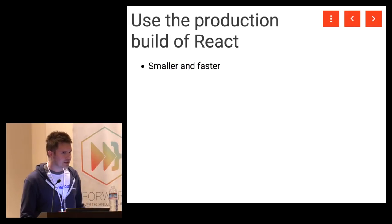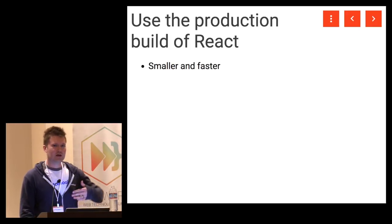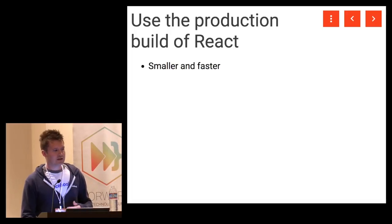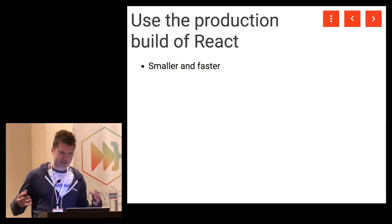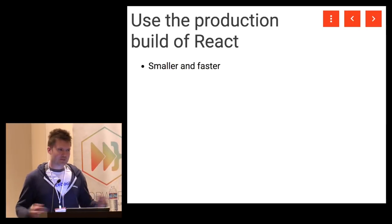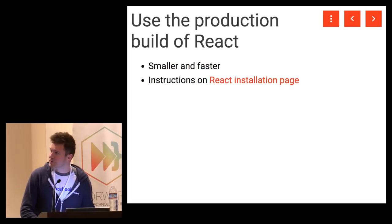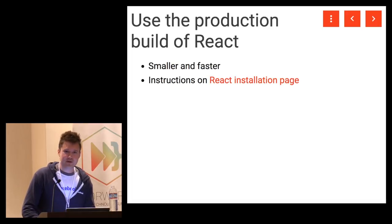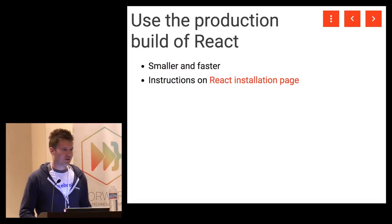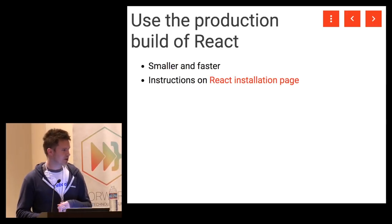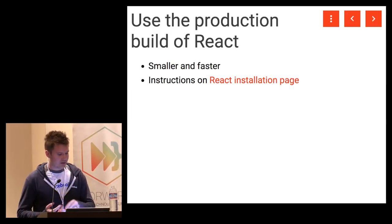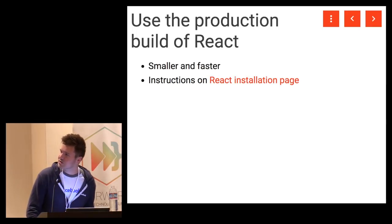The development build checks for things you might be doing accidentally or things known to be bad for performance, then gives nice user-friendly error messages. Those are stripped out in production so it's smaller and runs faster. Check out the React installation page — there are instructions for how to make sure you're using the production build with Webpack, Rollup, Create React App, UMD Builds, and pretty much everything else you might want to use.